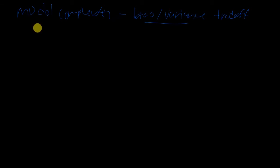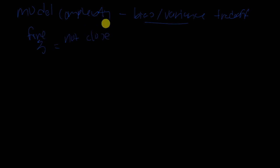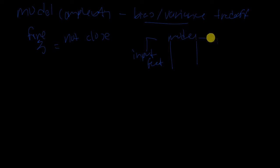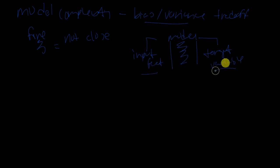First off, what is a model? A model is simply a way to map anything from an input to an output. We do it every day — for example, if there's a fire somewhere, you know not to get close because you'll get burned. In machine learning, the computer takes input features and maps them through an algorithm to produce a target variable.